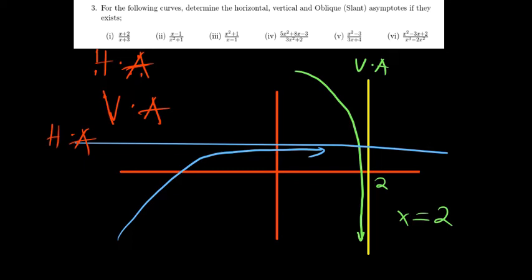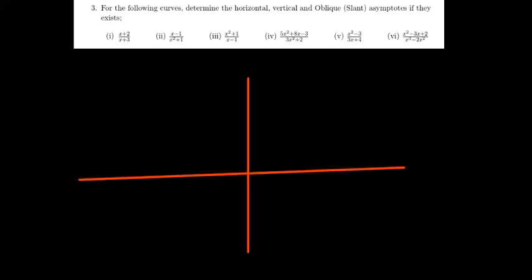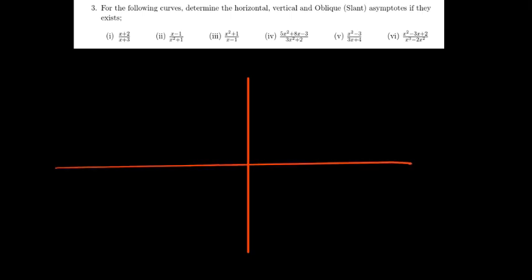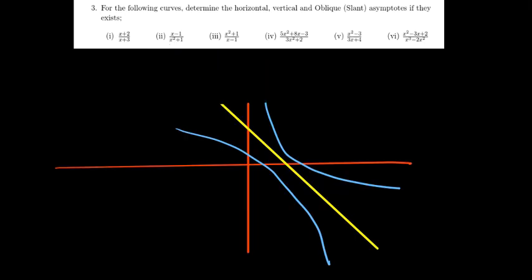Now there's another kind of asymptote we call a slant oblique asymptote. This is neither horizontal nor vertical — instead it's something that's slanted. The graph may follow along it like that. So this is called a slant oblique asymptote. There are cases that define when this basically gets to occur, and that's what we need to understand as we answer these questions.